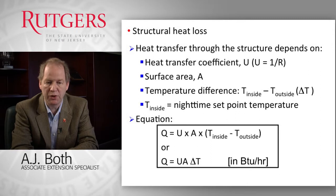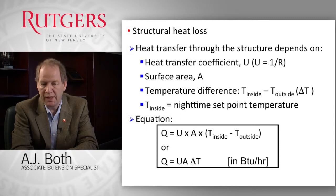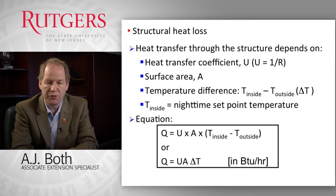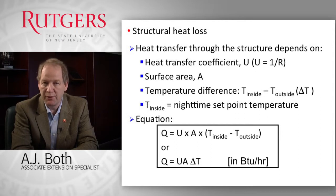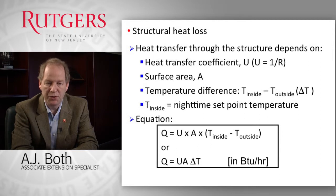Structural heat loss is calculated using a straightforward equation: it is the product of the heat transfer coefficient (U-value), which depends on the materials the greenhouse is made of, multiplied by the surface area of the material involved, and multiplied by the temperature difference between inside and outside. The inside temperature is typically the set point temperature, and the outside temperature is what we call the design temperature.